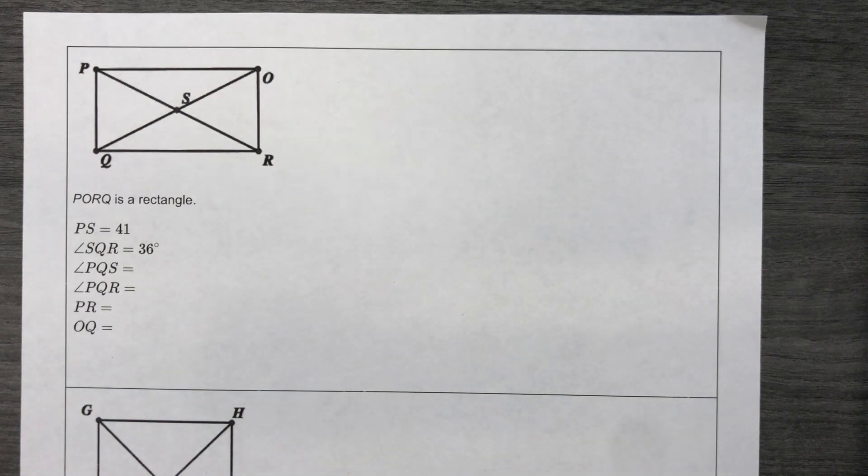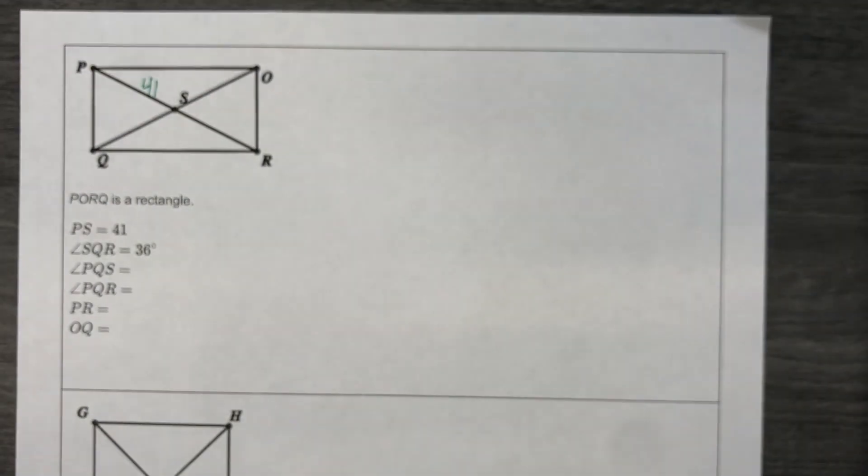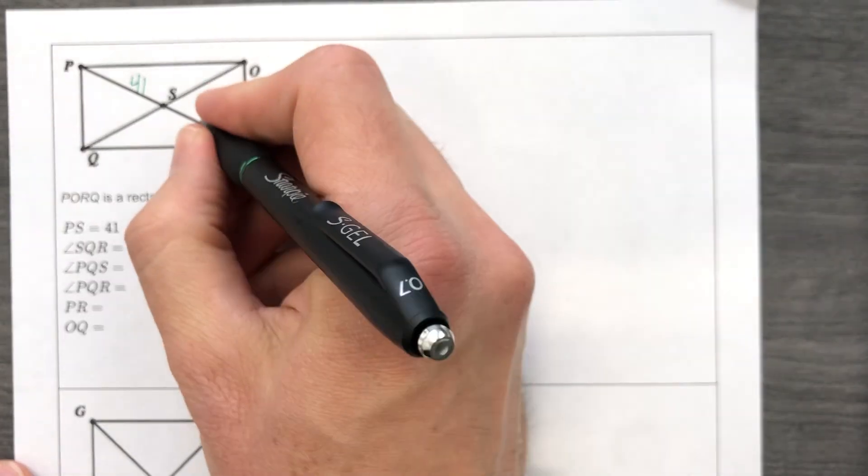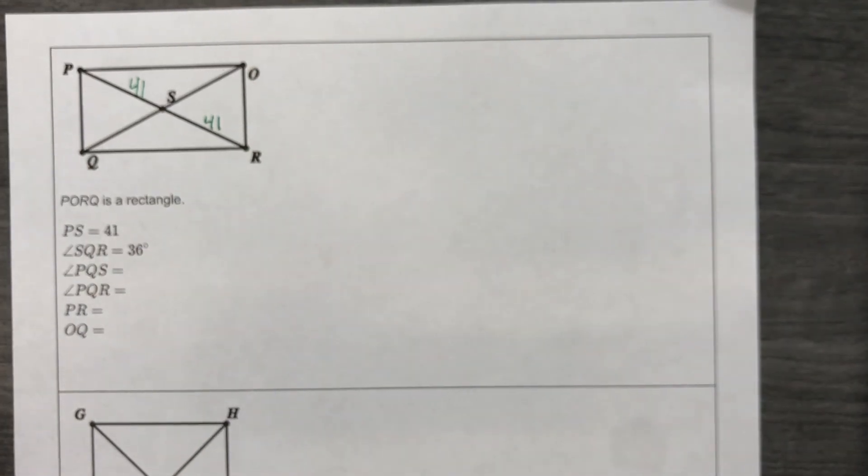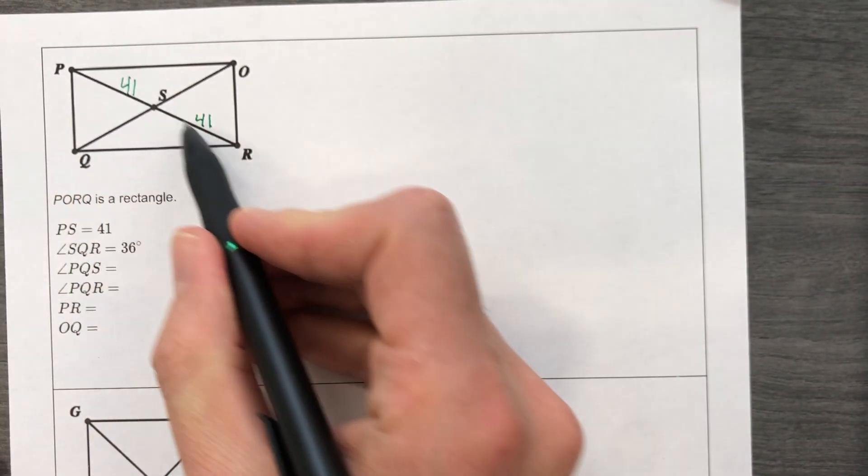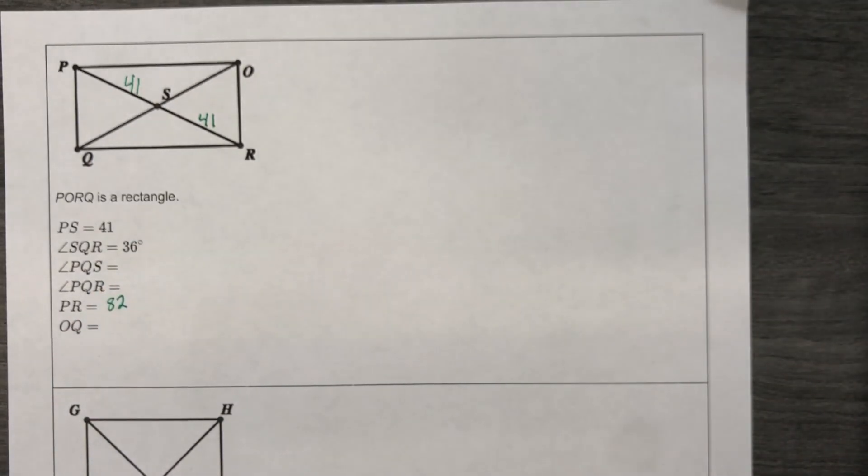Now we'll start labeling in green. P-S is 41. Stop right here and say everything else you know about that. That's 41. That's 82. So, if they're asking things like, what's P-R? 82. Just saying.